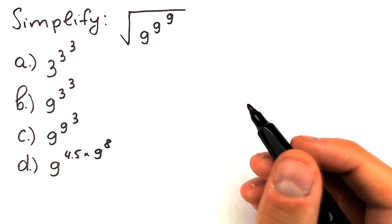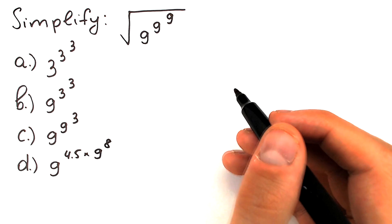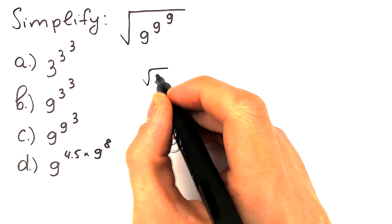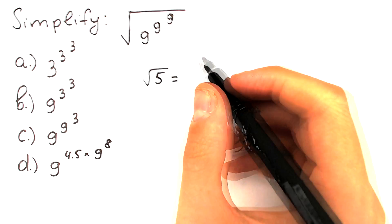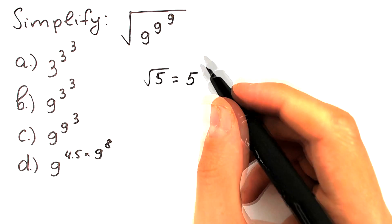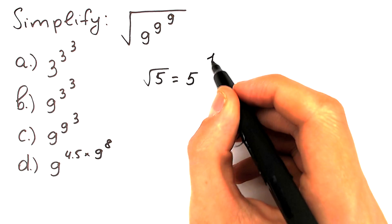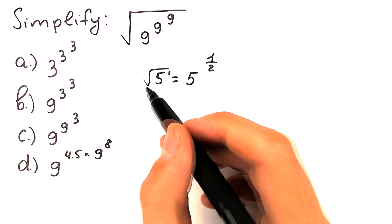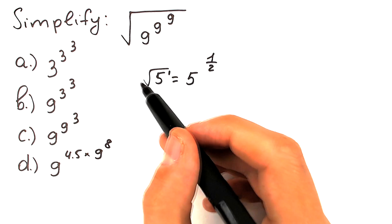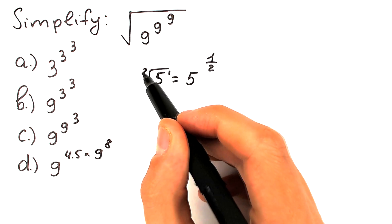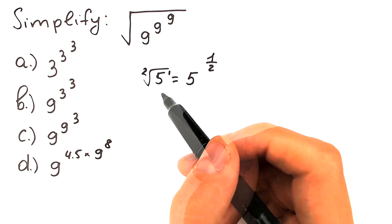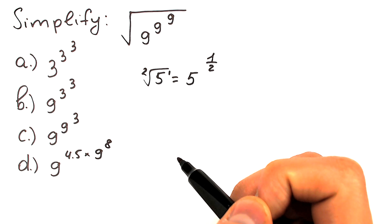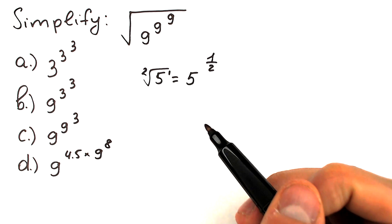First of all, we should know a really interesting thing about square roots. For example, square root of 5 — we can write this as 5 to the power 1 over 2. Right here we have 1 because 5 to the power 1 we don't always write explicitly, and because this is a square root, right here we have 2 in the denominator. So we can write this as 5 to the power one half.